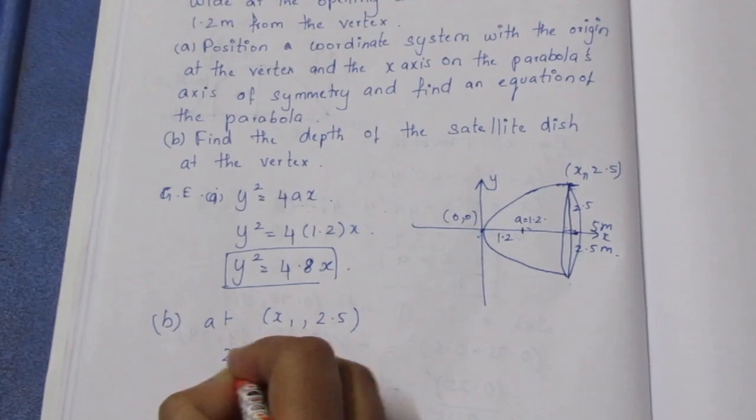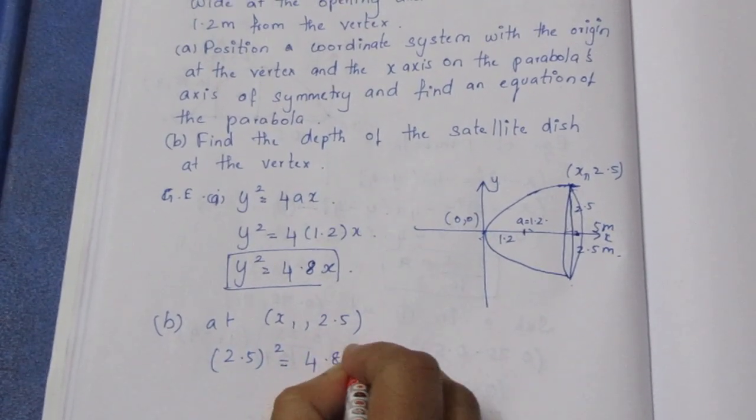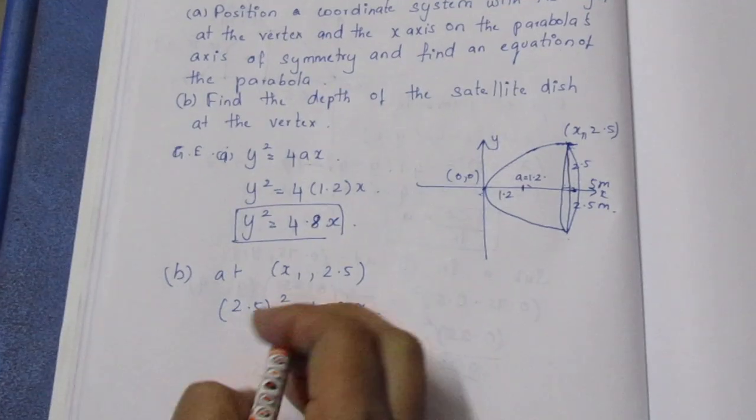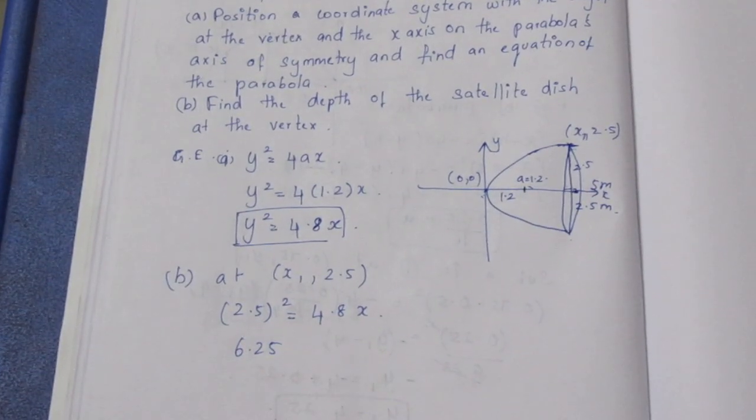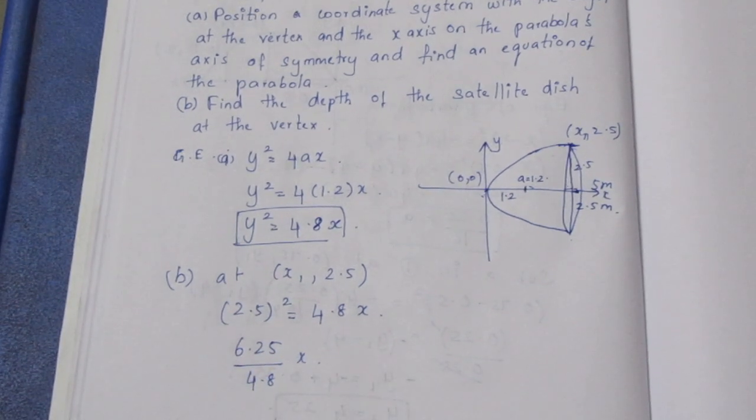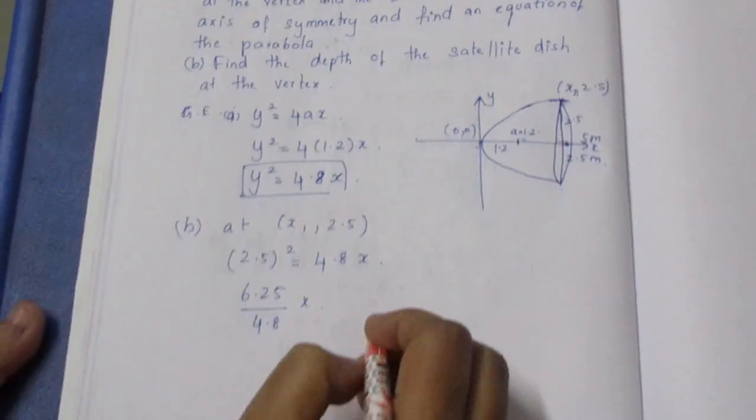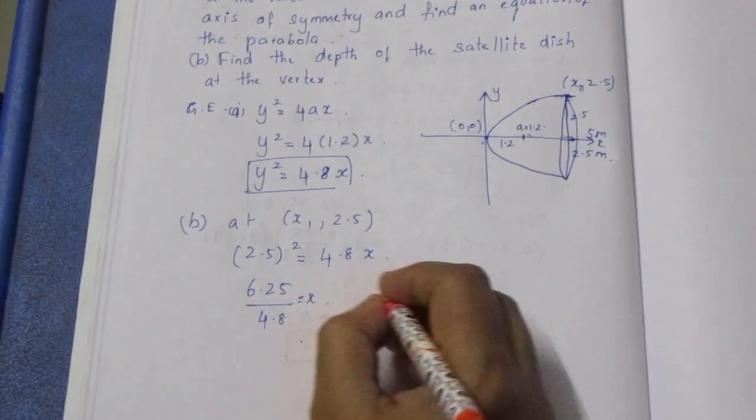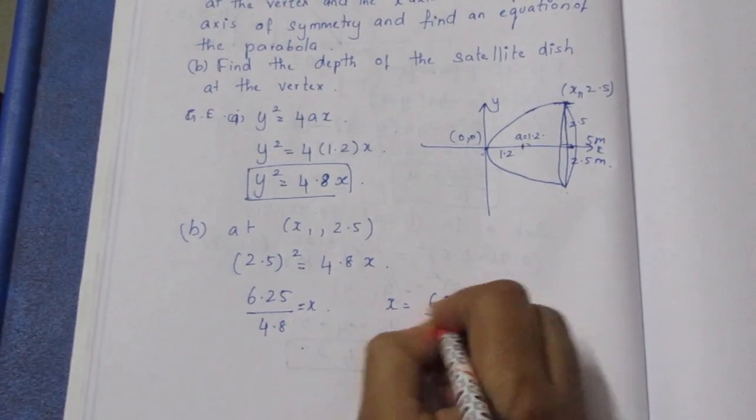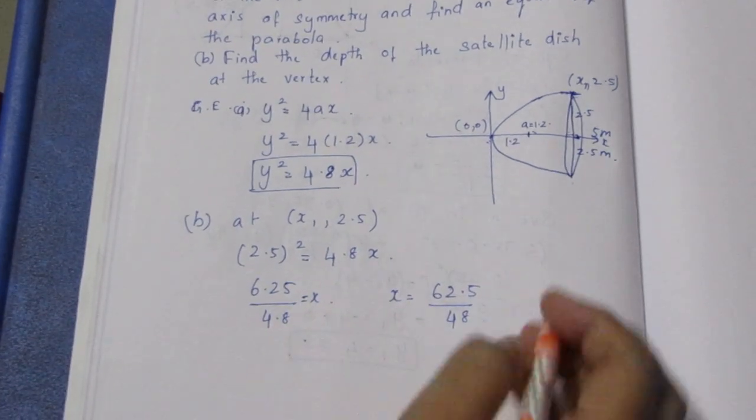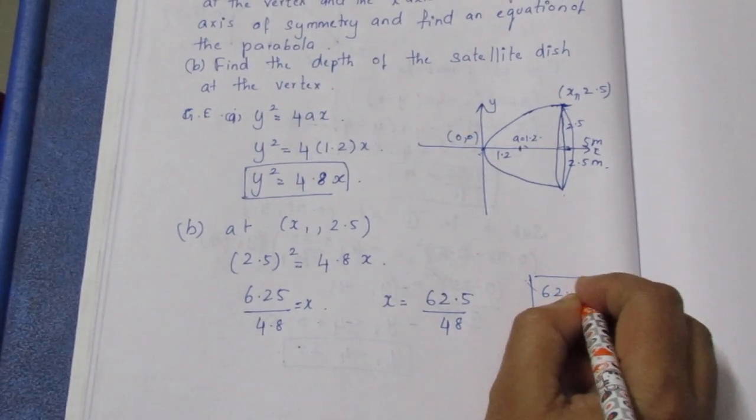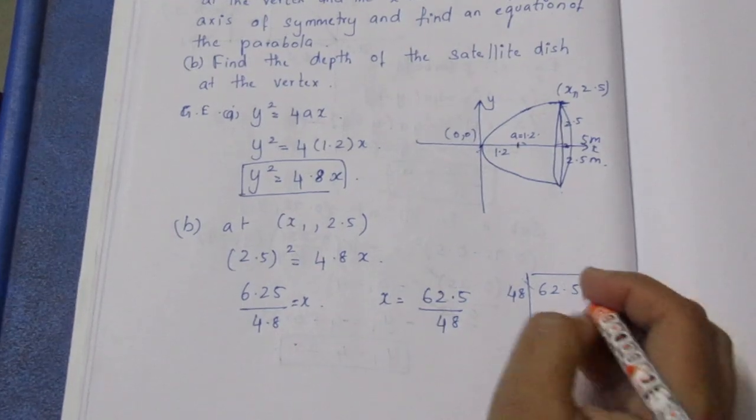2.5 square is equal to 4.8x. We have to divide. 2.5 square is 6.25. 6.25 is equal to 4.8x. So x is equal to 6.25 by 4.8. We can do this division, 62.5 divided by 48.